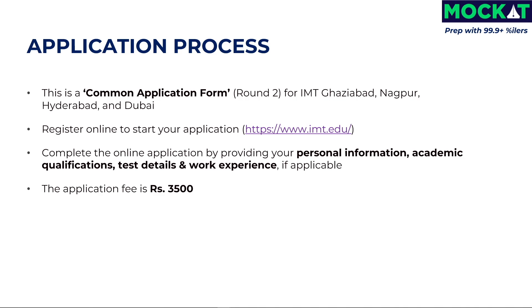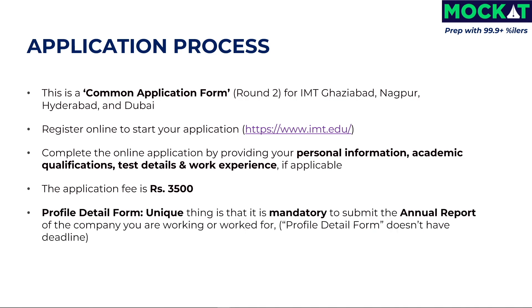The application fee is 3,500 rupees. After submitting your application, the profile detail form will open. In that form, you need to submit your 10th marksheet, 12th marksheet, graduation marksheet, and if you have work experience, you need to submit proof such as a work experience certificate, payslip, and so on. A unique requirement is the annual report of the company you are working for, which is mandatory. Many students are facing issues with this because for unlisted companies, it is difficult to get the annual report from the MCA India website. You may have to directly contact the company for this. It would be more convenient if this requirement were not mandatory. The profile detail form does not have a deadline.